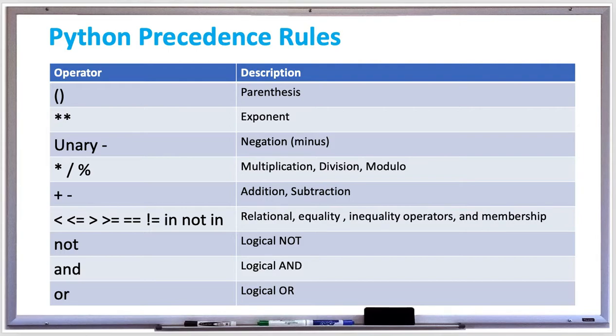Next is the exponent, so that's two asterisks in a row. Those get evaluated next, and then the unary minus sign, which is basically negation like negative five. So those happen first, and then all the multiplication, division,